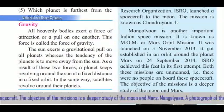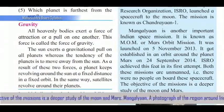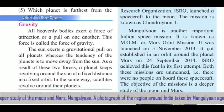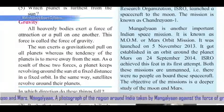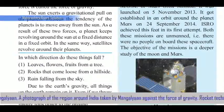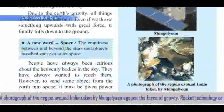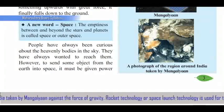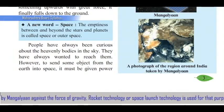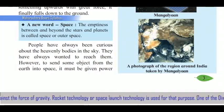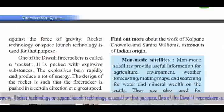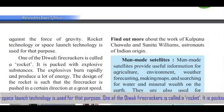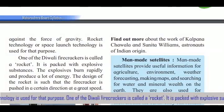Both these missions — Chandrayaan-1 and Mangalyaan — are unmanned, meaning there were no people on board these spacecraft. The objective of the missions is a deeper study of the Moon and Mars. Mangalyaan captured a photograph of the region around India as seen from space.